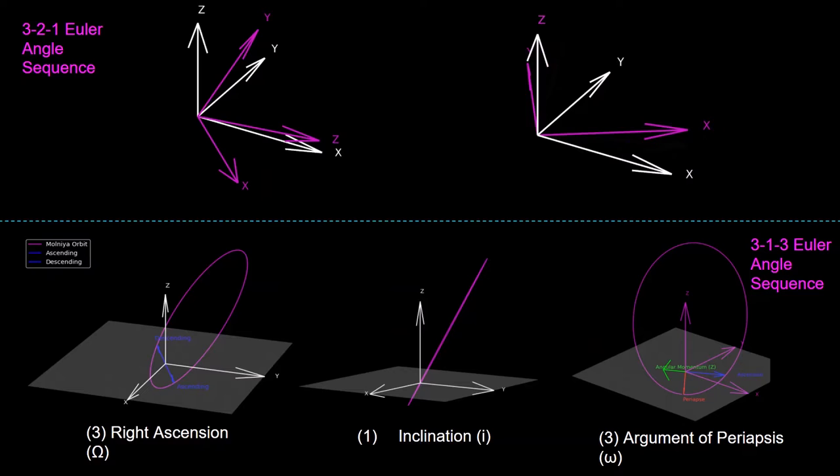This video will be going over several different examples to demonstrate how Euler angles are used for describing the orientations of reference frames. These examples will include spacecraft attitude controls, Keplerian orbital elements, the space shuttle, and airplanes.